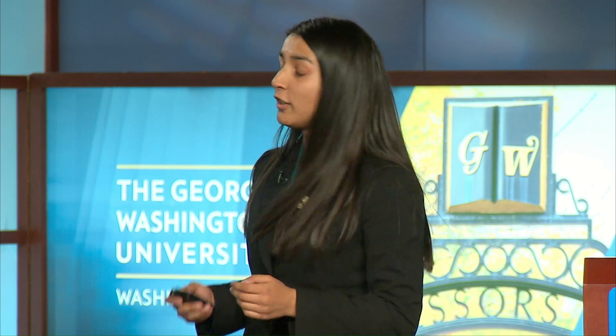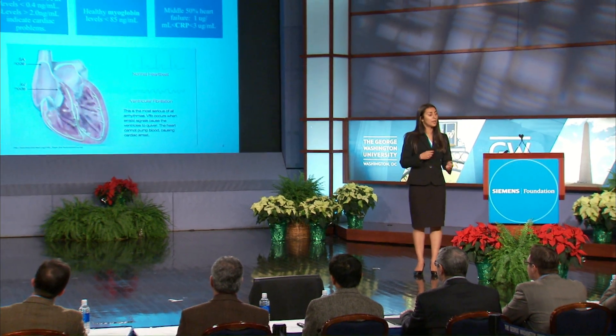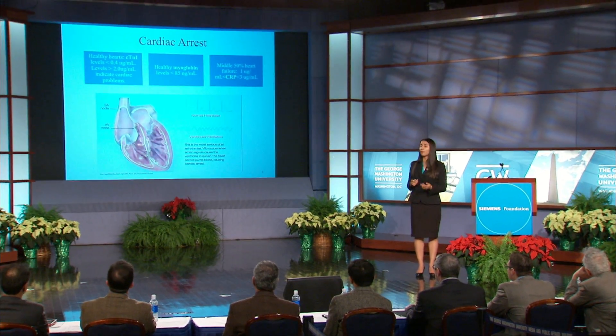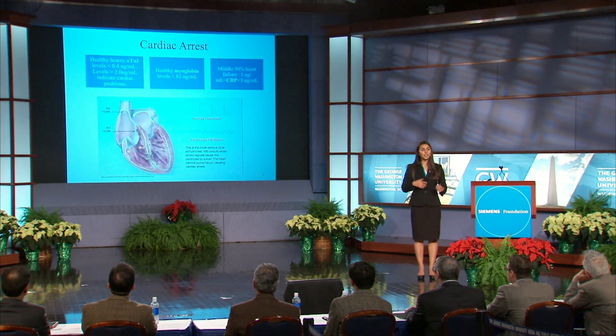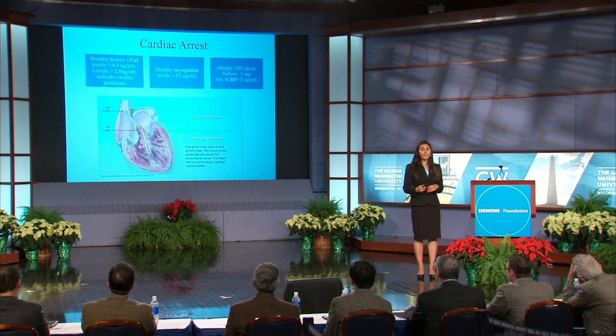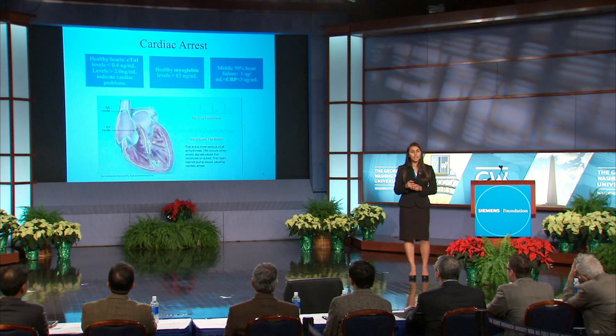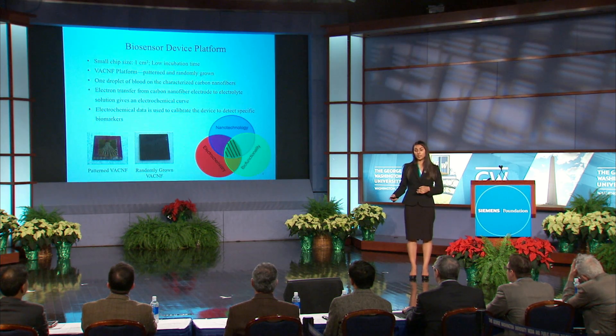Generally, when a heart goes into cardiac arrest, three main protein concentrations spike in the bloodstream: concentrations of troponin I, myoglobin, and C-reactive protein. This video shows ventricular fibrillation, an arrhythmia that happens in the heart generally before a cardiac arrest occurs. A healthy heart has troponin levels of less than 0.4 nanograms per milliliter, but concentrations above 2 nanograms per milliliter can indicate heart failure.